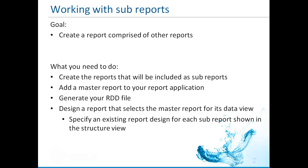What do you need to do to create a master report that uses sub-reports? This is the process at a high level, and you will see each step in detail during the demonstration. Start by creating the reports that you will include in the master report. Add a master report to your report application, and within the master report, call your sub-reports. Compile your report application and generate a new RDD file. Create a new report design document specifying the master report for the data schema, select the master report block when you add the data schema, then assign the appropriate sub-report to each of the sub-report triggers. The report is ready to execute.